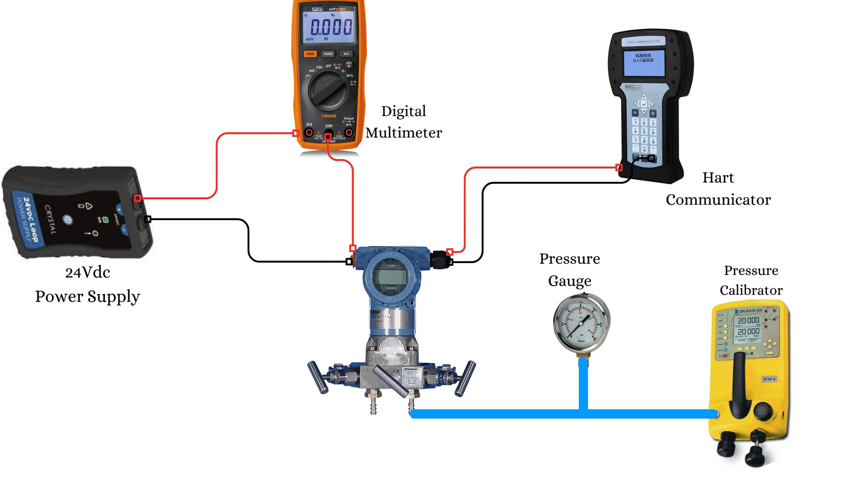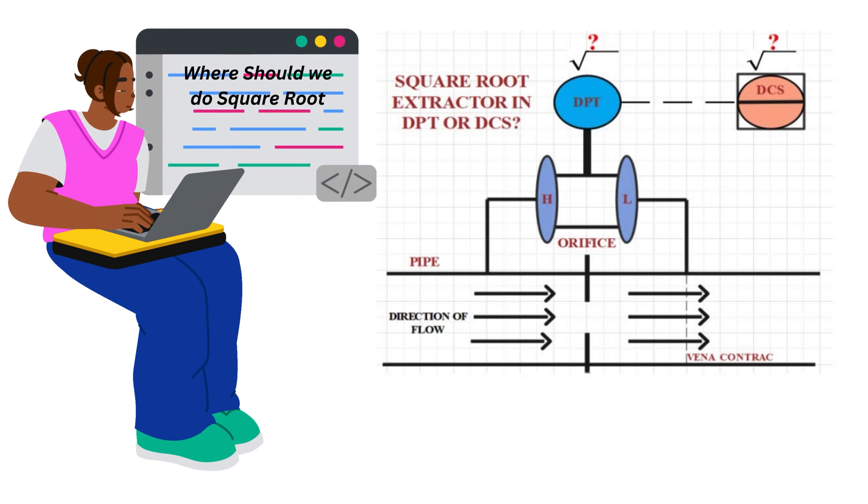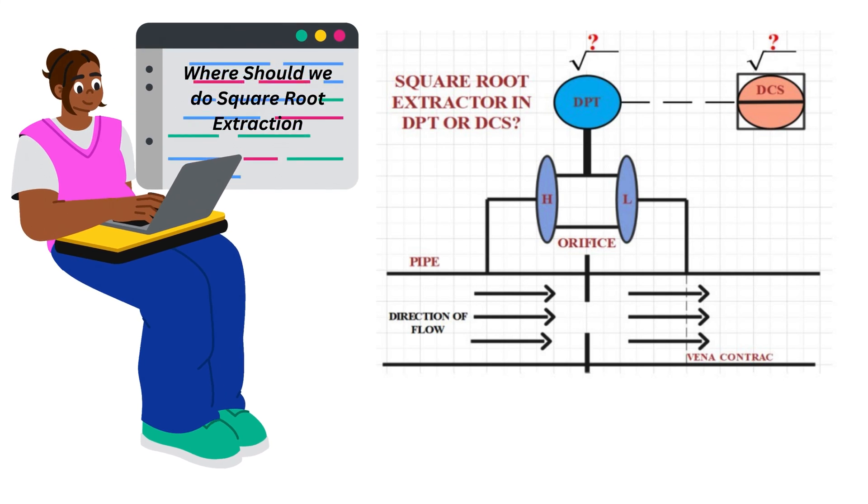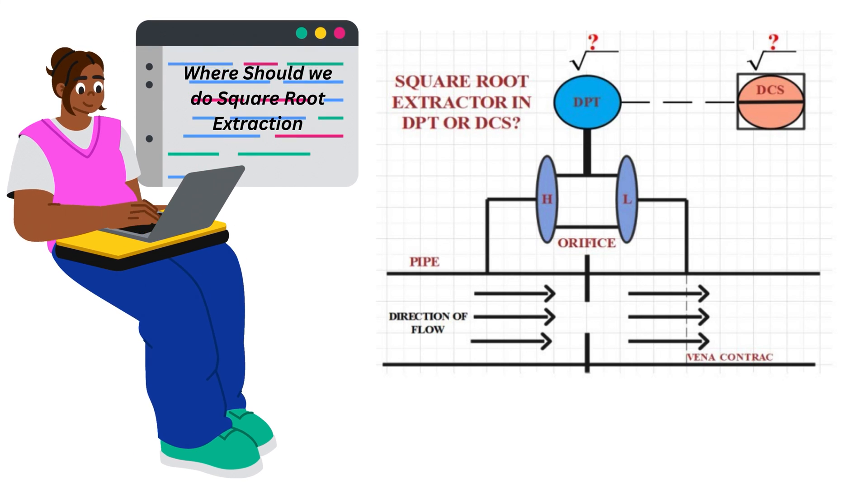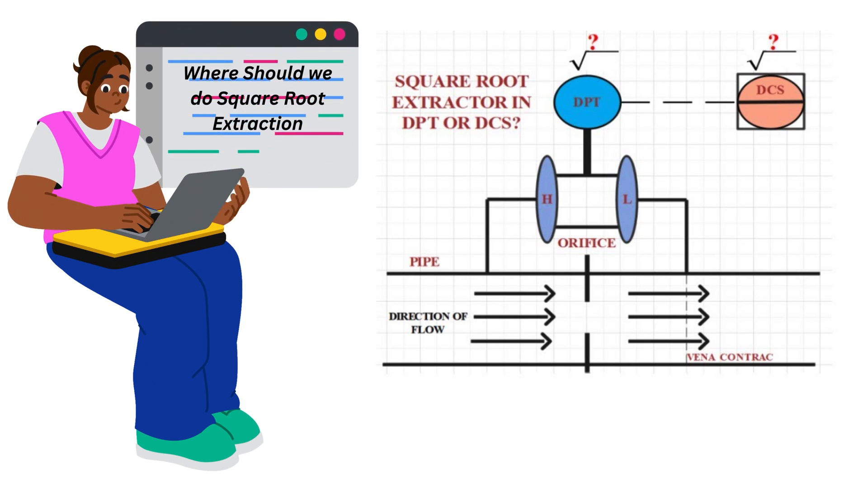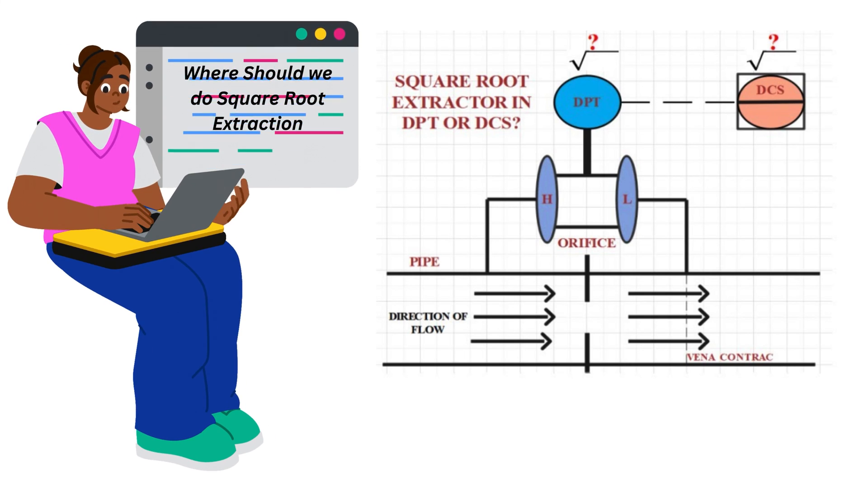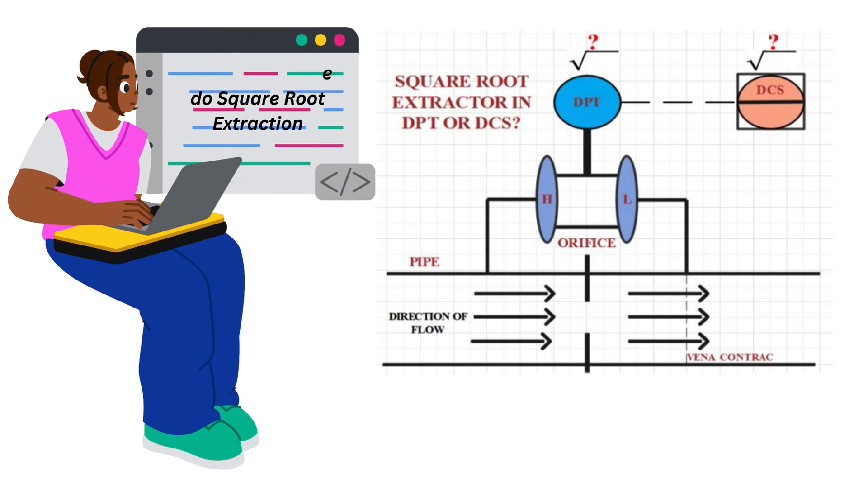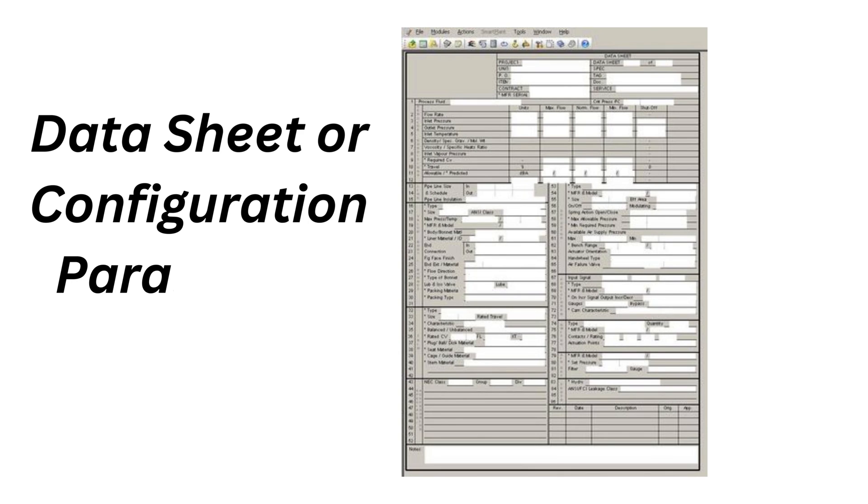Prior to starting the calibration, it is necessary to determine whether the square root extraction takes place in the DP transmitter or in the PLC-DCS. The output value in mA of the DP transmitter will depend on where this square root extraction occurs. So check the datasheet or the configuration parameters of the DP transmitter to see if the transmitter does the square root extraction.